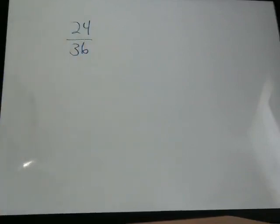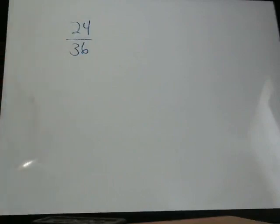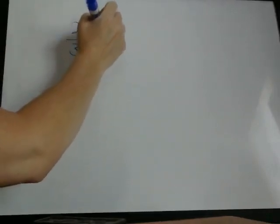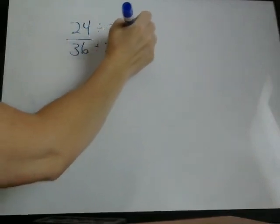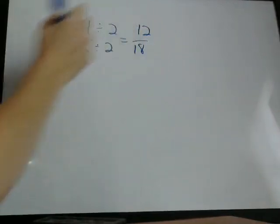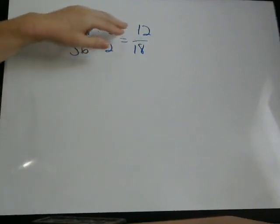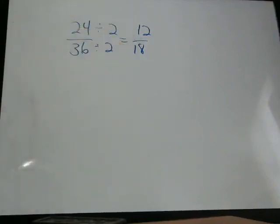If we look at a fraction like 24 over 36, and I will say, if you don't know how to recognize whether a number is divisible by, we'll say 2 through 10, watch the video on the Facebook page called Divisibility, and that will teach you to recognize how do you know what numbers can be divided into each of these. So we know that 2 can be divided into each of these, so we can do that, and we end up with 12 18ths, but 2 can also be divided into both of those numbers. So we're not in lowest terms yet.